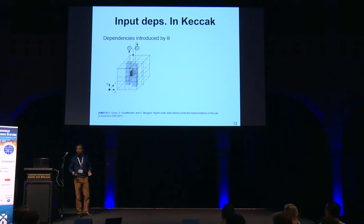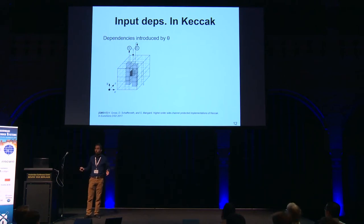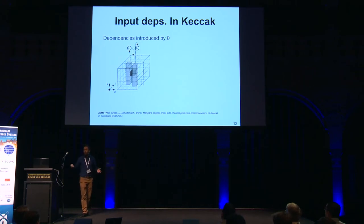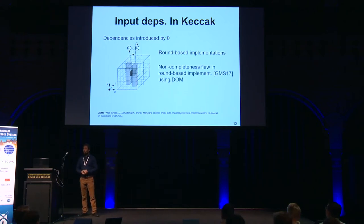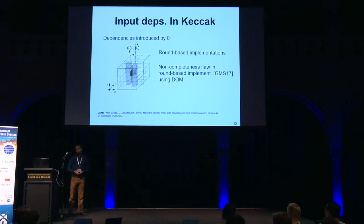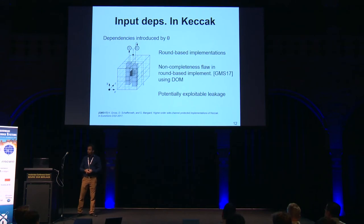That previous example was simple and perhaps obvious, but what happens with more complex operations — like the theta step in Keccak — which introduces intricate dependencies in the state? Round-based implementations are very risky. We found a flaw in previous round-based implementations in the literature using the DOM multiplier. This could lead to potentially exploitable leakage. We contacted the authors; they acknowledged our findings and updated their work on ePrint.